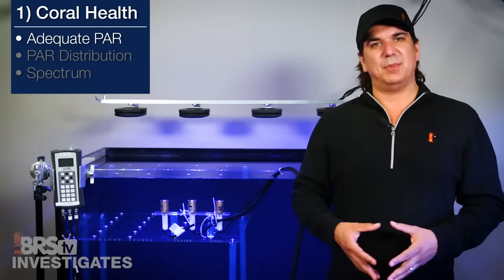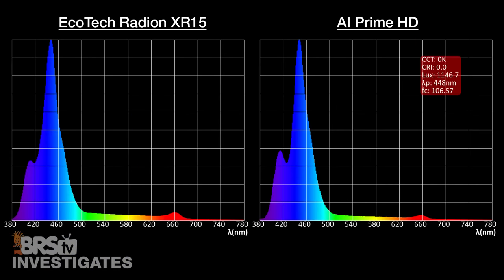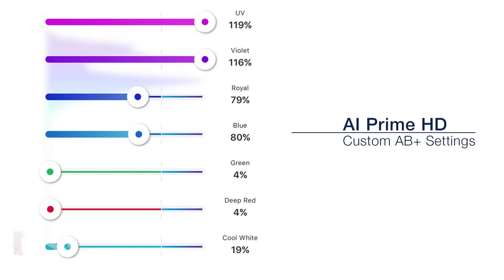I am not sure it is perfect but this is the program we developed and I think it turned out pretty close to Ecotech's AB Plus Spectrum mix. This had the UV set at 119 percent, violet at 116 percent, royal blue at 79 percent, blue at 80 percent, green at 4 percent, red at 4 percent, and cool white at 19 percent.